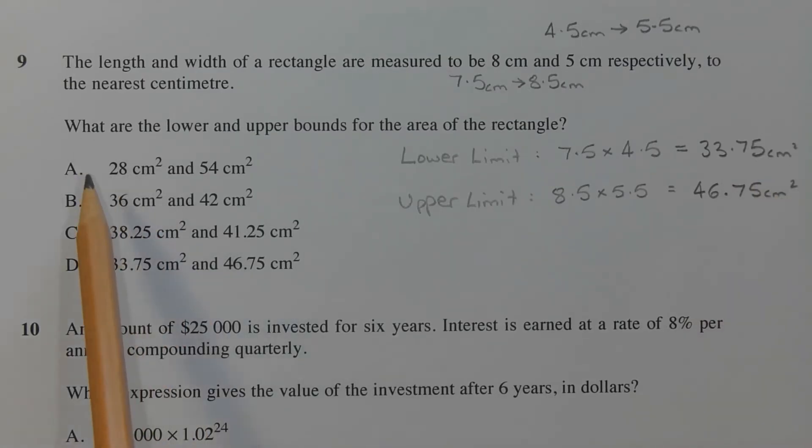Now, if we consider the four options, only one of those options shows 33.75 cm², which is Option D. So we know at this stage, Option D has to be correct.